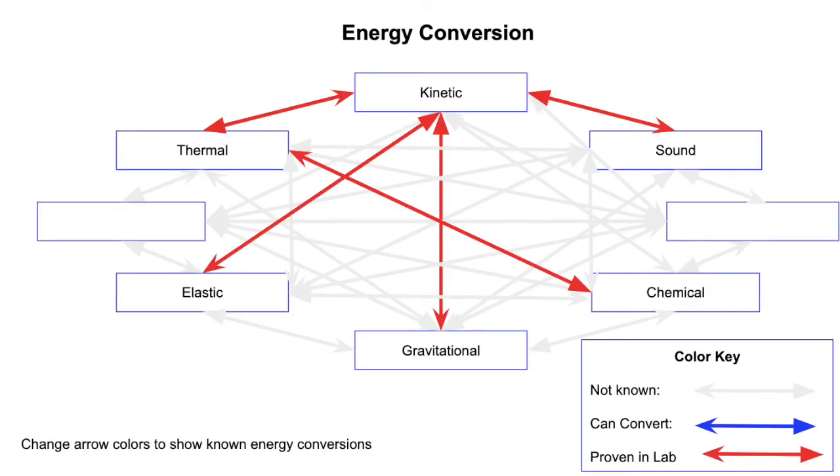As we saw in the lab, chemical energy from the battery converts into electrical energy. And that electrical energy eventually gets converted into light energy that lights up the light bulb.